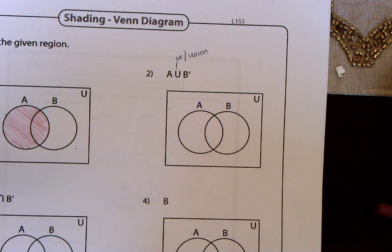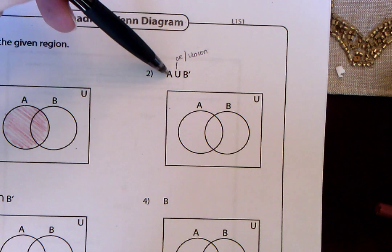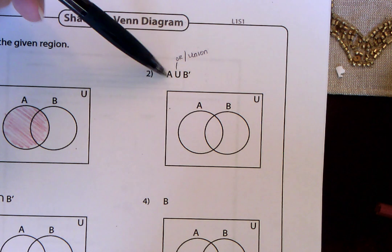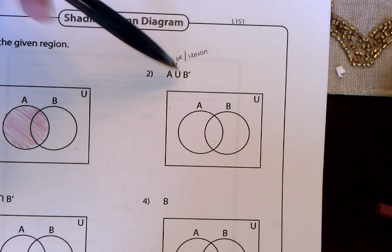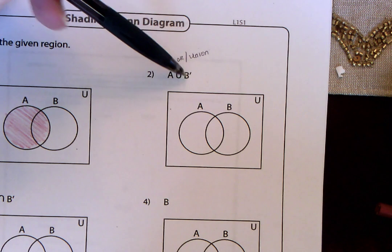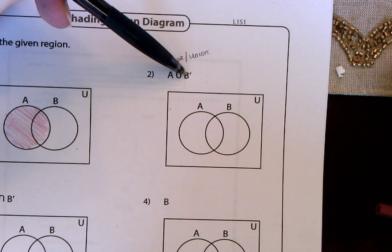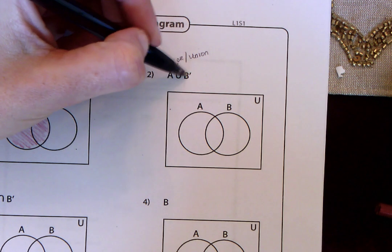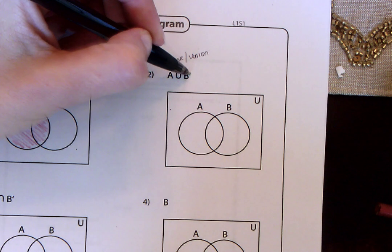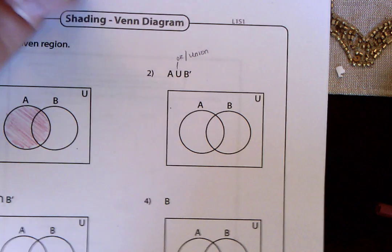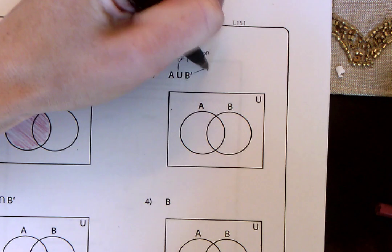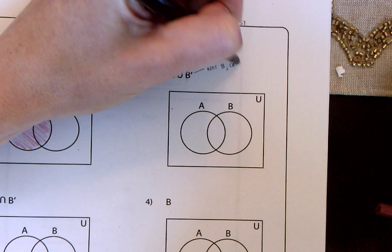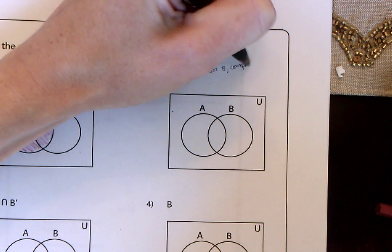And so what that means is they want everything that's in set A, that circle, in union with the complement of B. This is what this little symbol means. It's the set of B, but it's basically saying not B. You could think of it as not B, or the complement of B, is what they call that.